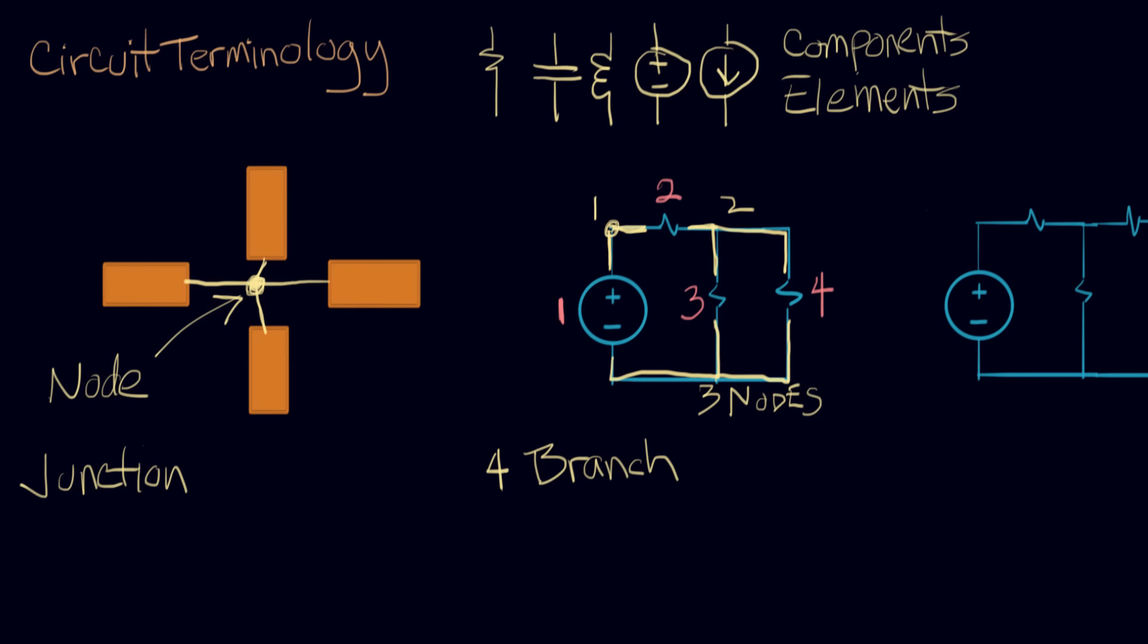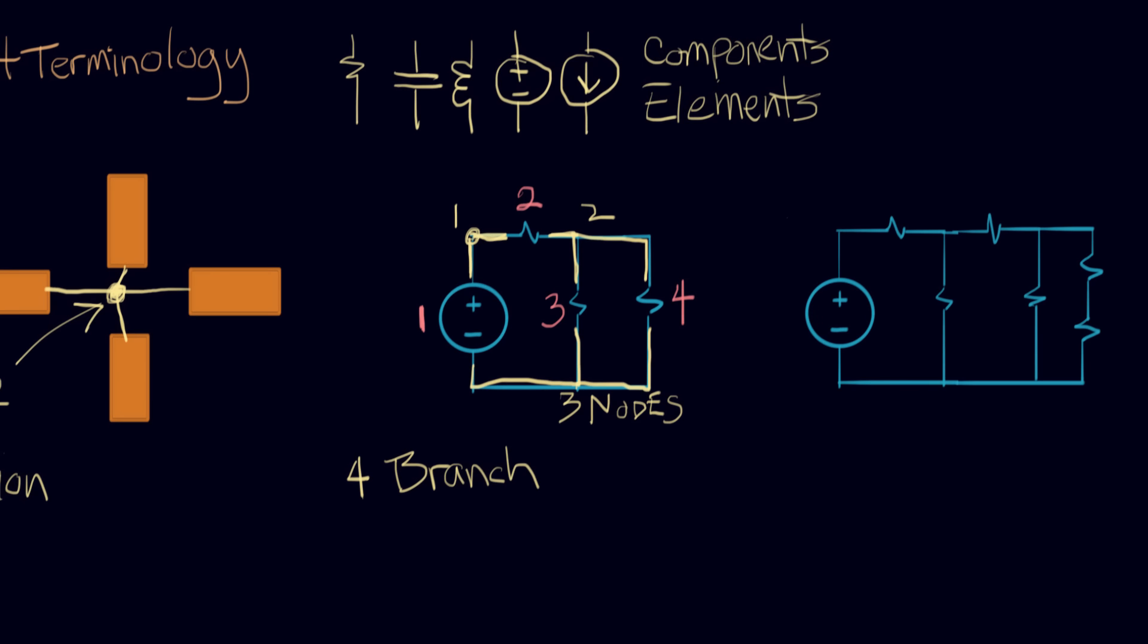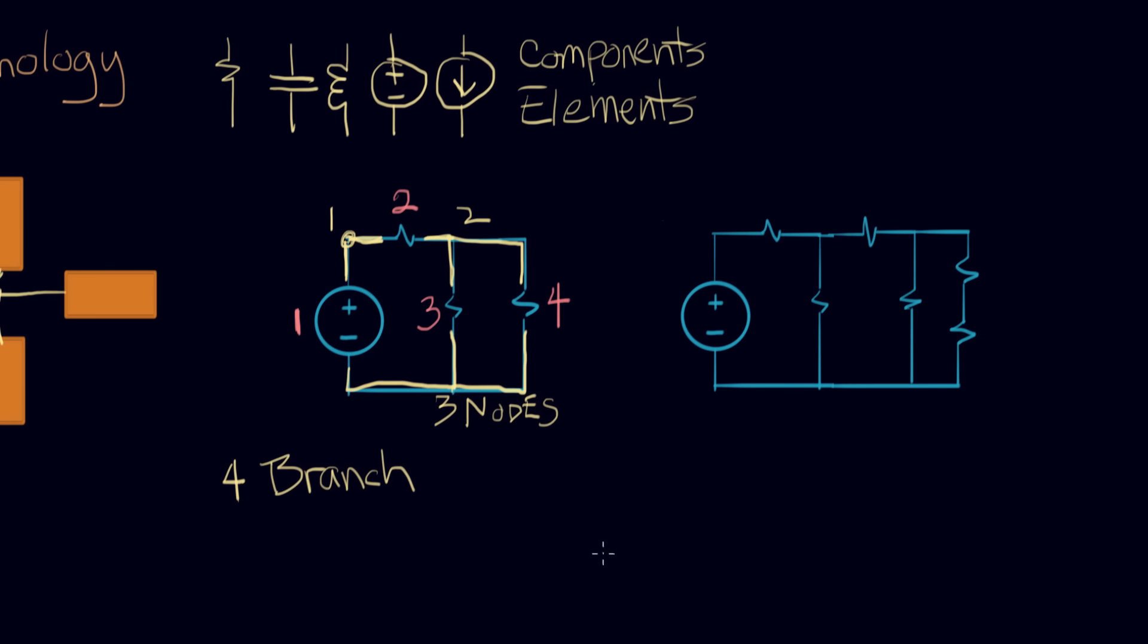I've moved the picture over a little bit so that we can do this again on a little more fancy circuit. So first thing we're going to do again, just to repeat the process, we're going to count the nodes. Here's a junction between a resistor and a source. Here's three resistors connected by a perfect wire, so that's the second node. Here we find three more resistors connected by a perfect wire, there's third.